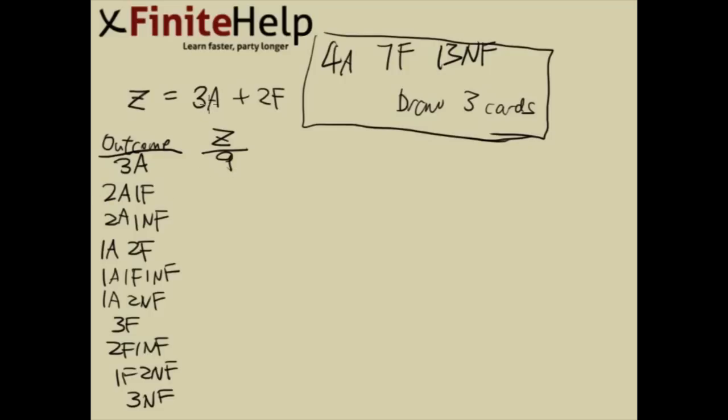2 aces is 6, plus the face card, which is worth 2. That's going to be 8. 2 aces, 1 non-face: 2 aces is worth 6, and the non-face isn't worth anything, so 6. 1 ace is 3, 2 face cards is 2, so that's 7. 1 ace, 1 face: that's going to be 5. 1 ace, 2 non-face: that's 3.